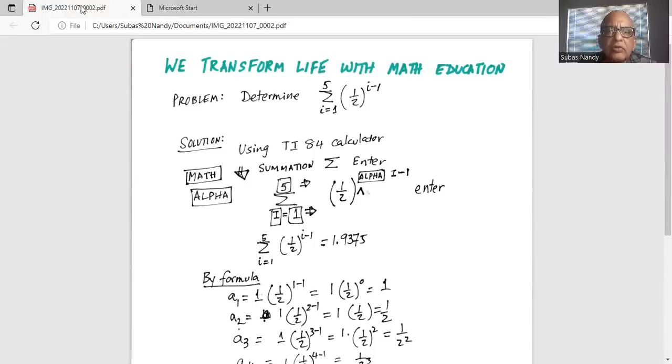Determine sum of i equal to 1 through 5, half raised to the power of i minus 1.